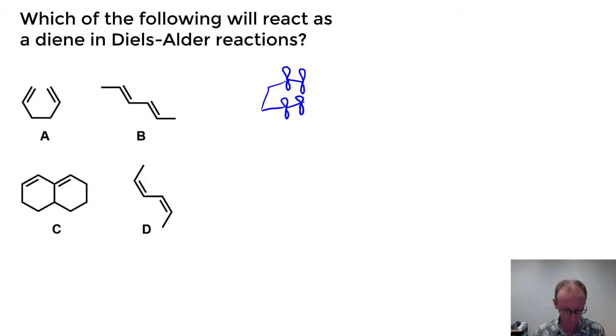We have to have a conjugated diene for this reaction to take place. Now compound C is in the s-trans conformation and it can't adopt an s-cis conformation so that compound also can't undergo a Diels-Alder reaction. The two ends of the pi system are too far apart to overlap with the pi system of a dienophile.